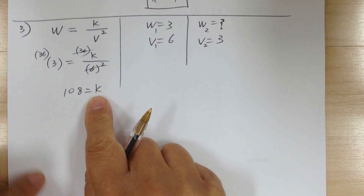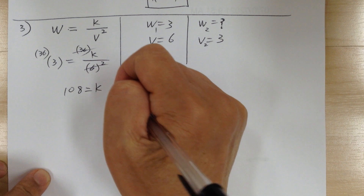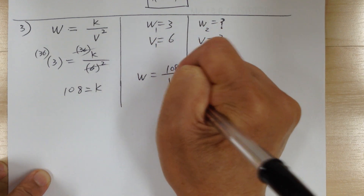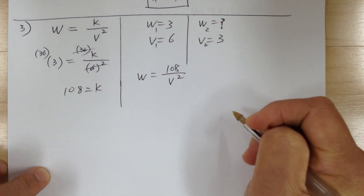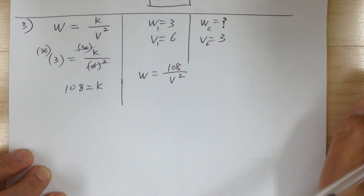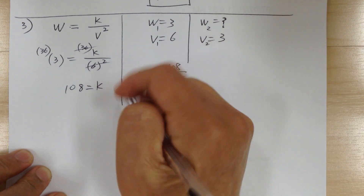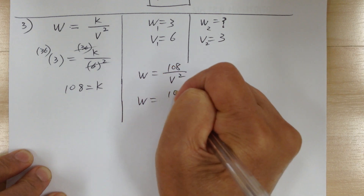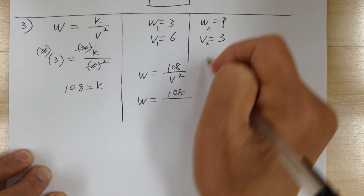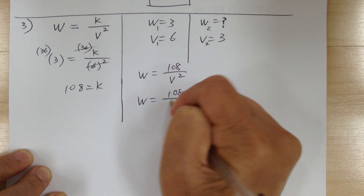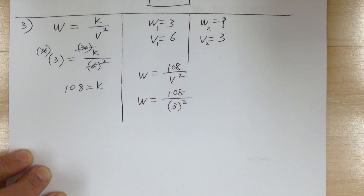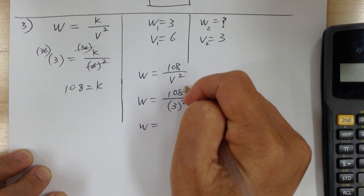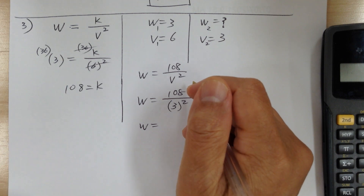Once I find k, I update my equation: w equals 108 over v squared. Using the equation to solve: w equals 108 divided by 3 squared. Use your calculator — you're going to get w equals 12.